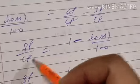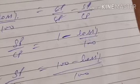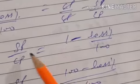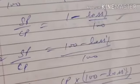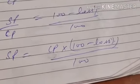So the ratio of SP upon CP in case of loss is: SP upon CP equals 1 minus loss percentage upon 100. Compare with profit: in profit, SP upon CP equals 1 plus profit percent upon 100; in loss, SP upon CP equals 1 minus loss percentage upon 100. Taking LCM: SP equals CP into (100 minus loss percentage) upon 100.